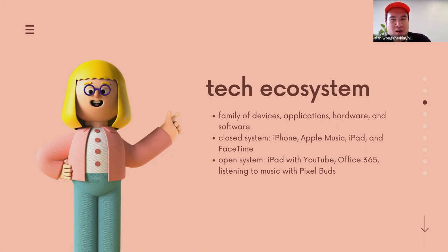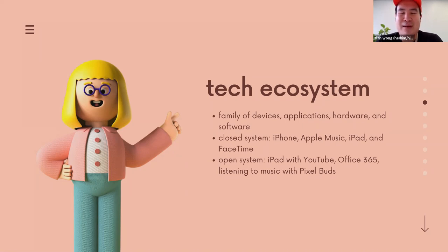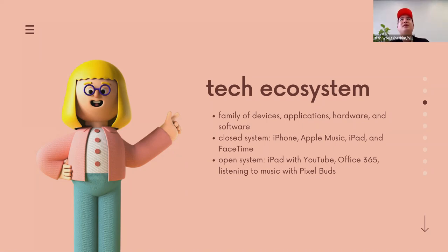So the hardware — like phones — and the software. Within this, there are usually two mainstream types of systems: a closed system or an open system. Closed systems — a very famous one that the majority of you know — is Apple.